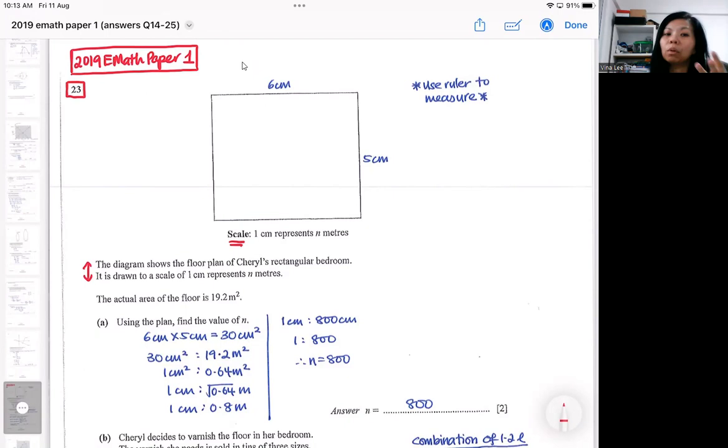You need to know that they gave us the actual area, but we don't have the map area. So from the idea here, we will need to measure. You need to measure the dimension, which will give you around 6 centimeters and 5 centimeters. After you measure, the 6 centimeters and the 5 centimeters will come from your own measurement using ruler.